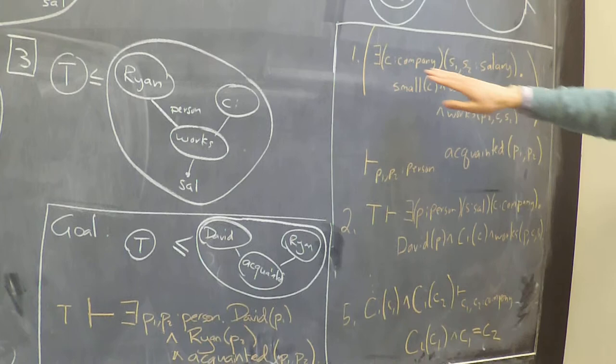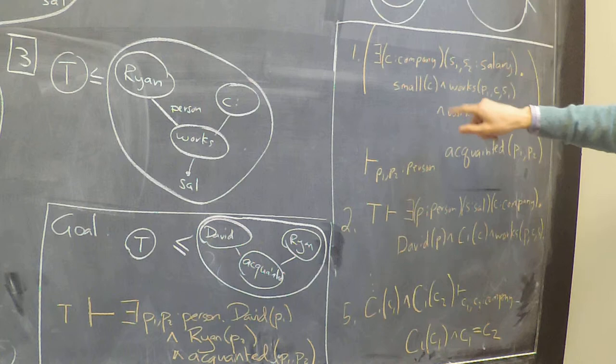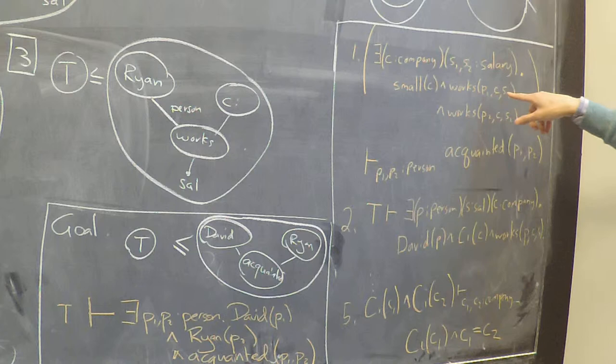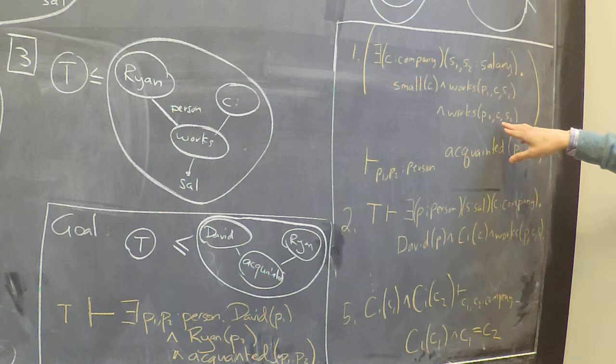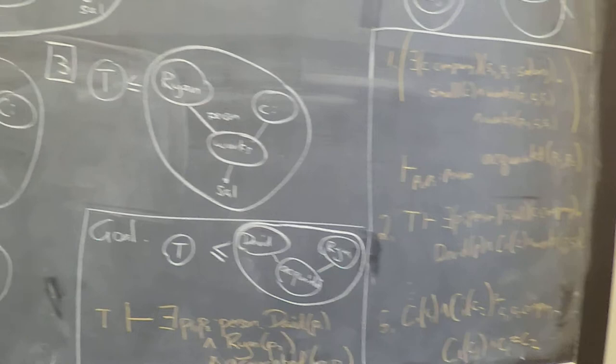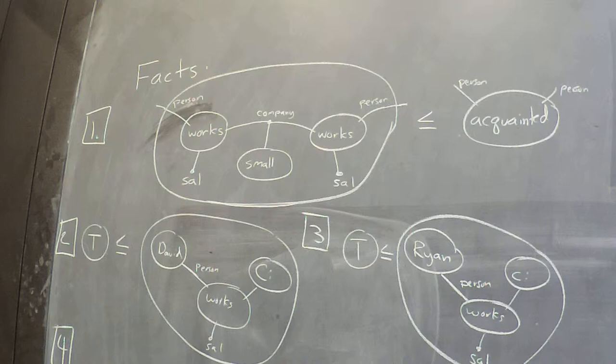It's translated in regular logic in the text-based form in this way: there exists a company C1 which is a company and S1, S2 that are salaries such that C is a small company. If person P1 works at company C for salary S1 and person P2 works at company C for salary S2, then person P1 and person P2 are acquainted. And so here's the diagrammatic version for comparison once again.